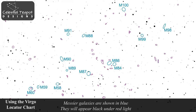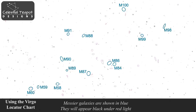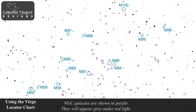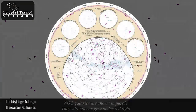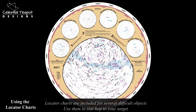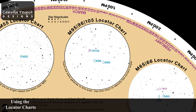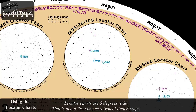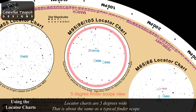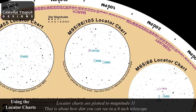Messier galaxies are drawn in blue and will appear dark black under red light. NGC galaxies are drawn in purple and will show up as grey under red light. Additional locator charts are included for several difficult or easily misidentified objects. The locator charts show a section of sky about 5 degrees wide, similar to the view through the finder on most telescopes. Stars in the locator charts are shown down to magnitude 11. The brighter stars will show up in your finder; the dimmer stars will be visible in your main scope.